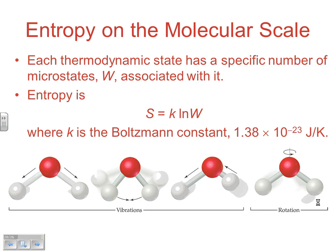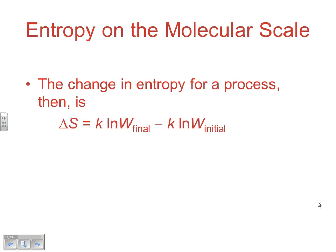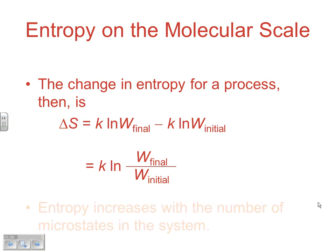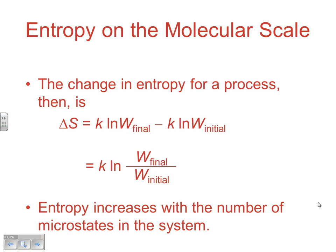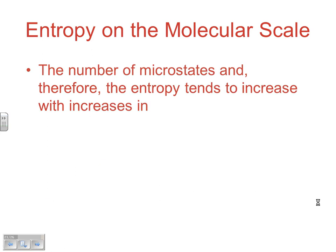The change in entropy for a process, then, would be K natural log of the microstates final minus K natural log of the microstates initial, which would give you this expression. K natural log of W final over W initial. So entropy is going to increase with the number of microstates that you have. We're not really using this equation to solve anything. You're just looking at, mathematically, what would be happening if we were increasing or decreasing the number of microstates. So entropy is going to increase with the number of microstates of a system.